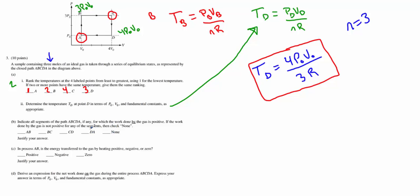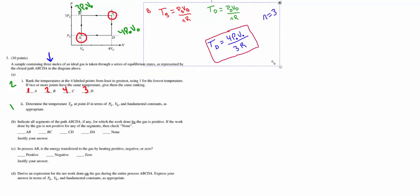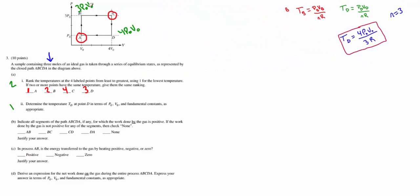And this is actually only worth 1 point. Right, B. Indicate all segments of the path ABCDA, if any, for which the work done by the gas is positive. If the work done by the gas is not positive for any of the segments, then check none. Let me clean this up real quick. I'm going to erase these markings up here.